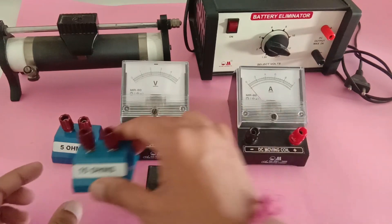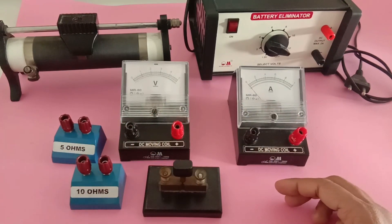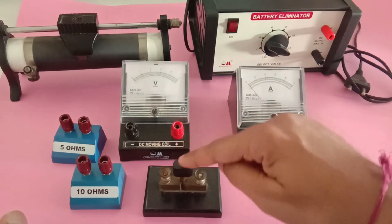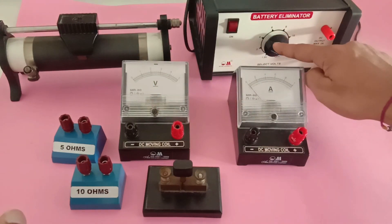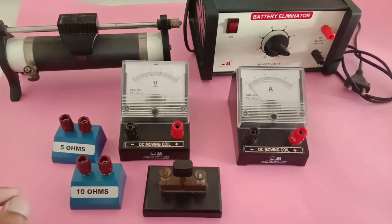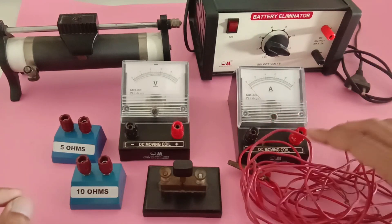Here I have a few resistances: 5 ohm and 10 ohm. This is a voltmeter, this is a key, that is a rheostat. This is a battery eliminator, or generally it can be referred to as a battery, and this is an ammeter. These are some connecting wires.